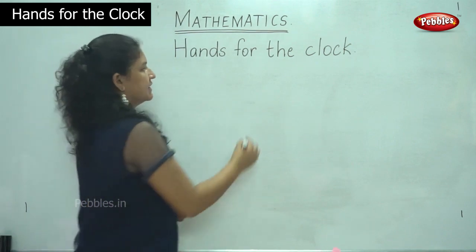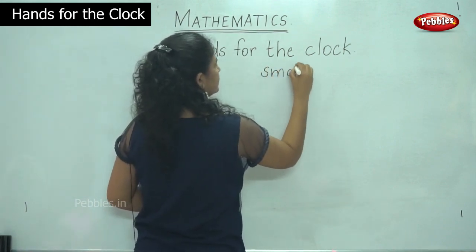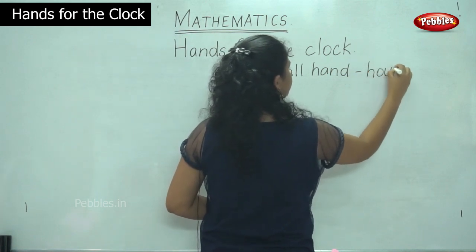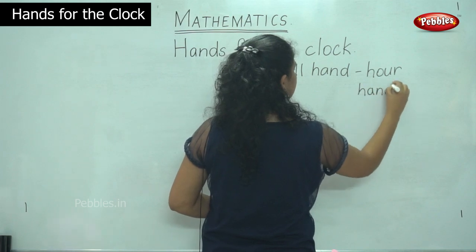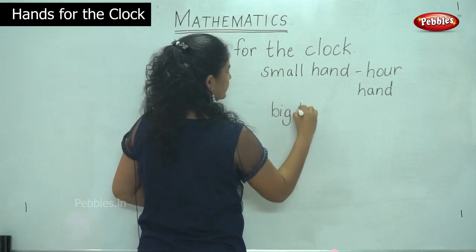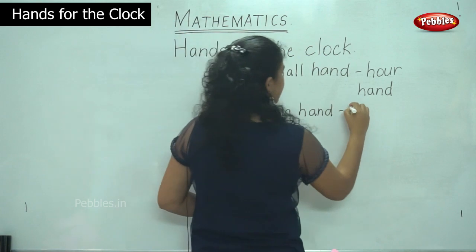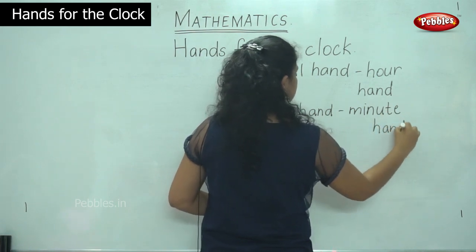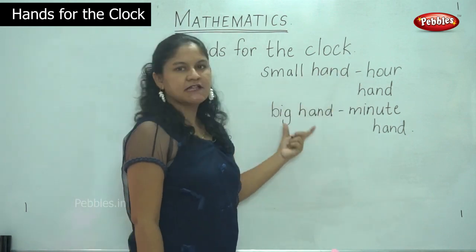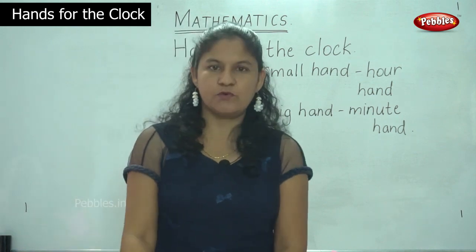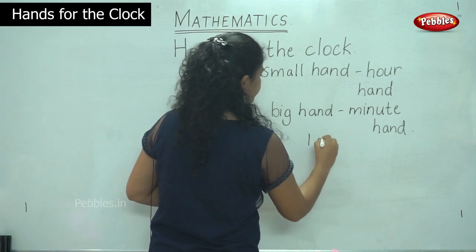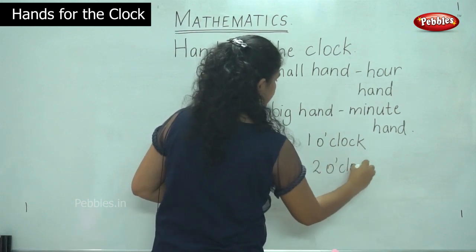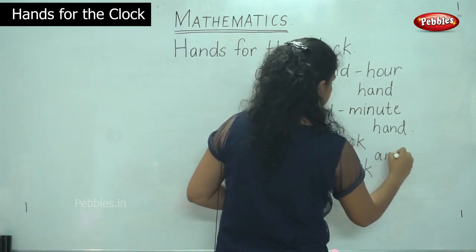So as we have already learnt, the small hand is the hour hand. And the big hand is the minute hand.